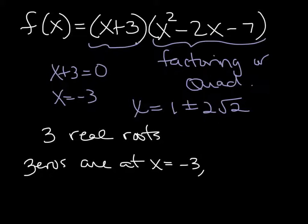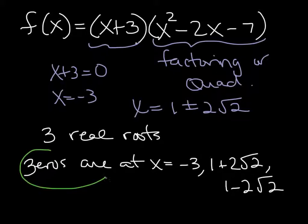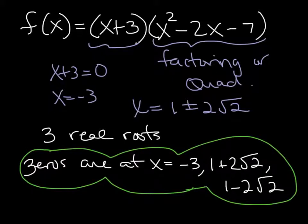So that means that this graph crosses the x-axis three times, because I got all three roots to be real. So my actual 0s are a negative 3, 1 plus 2 radical 2, and 1 minus 2 radical 2. Those are my actual 0s for that function, which translate to the x-intercepts.